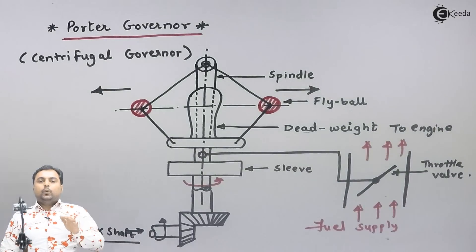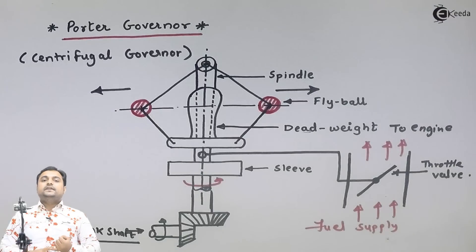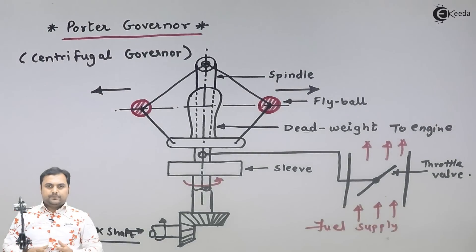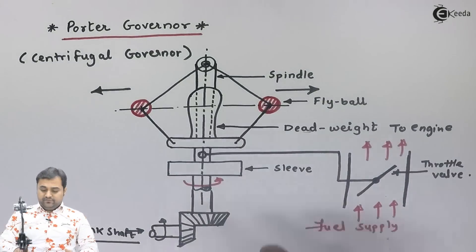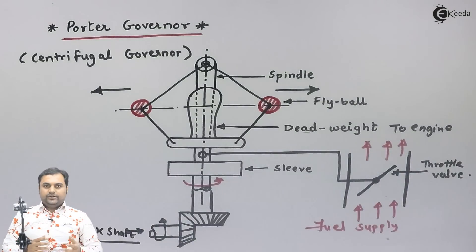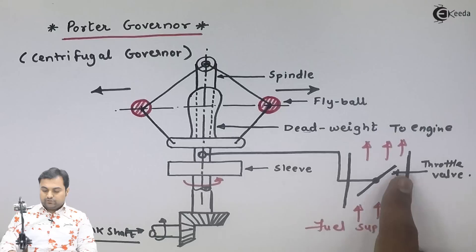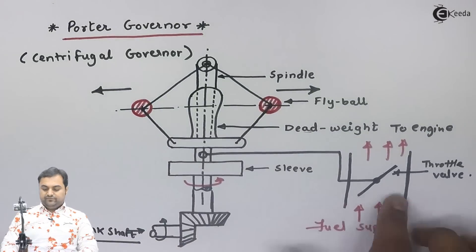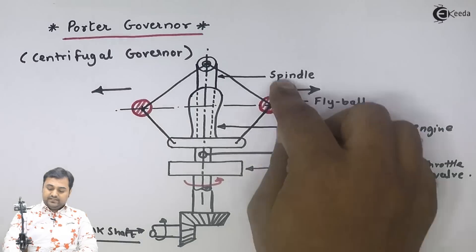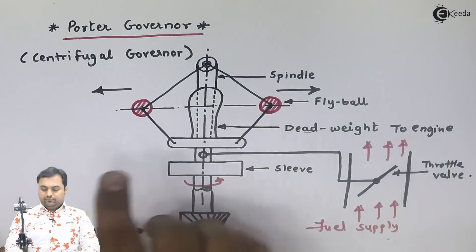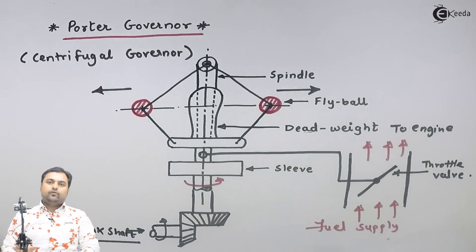When the speed of the engine increases — because the load on the engine is decreased — we reduce the fuel supply. When the load on the engine decreases, its speed increases; when the load increases, its speed decreases. Accordingly, this governor controls the supply of working fluid to the engine, maintaining a constant speed. All governors have such control over fuel supply — the only difference in the types of governors is in their construction. The Porter governor has dead weight; other governors differ only in construction, otherwise the working is the same for all types.